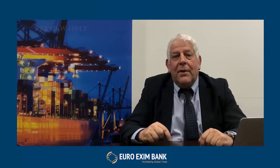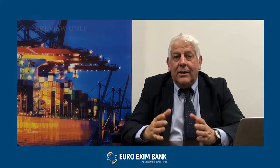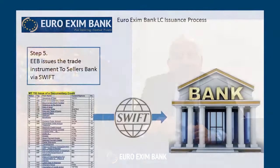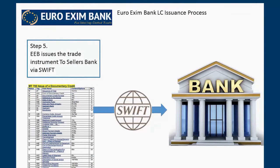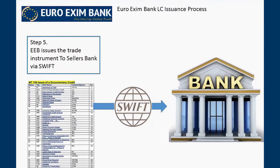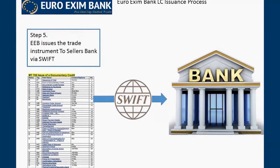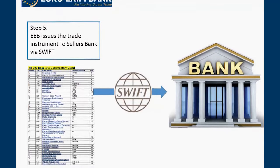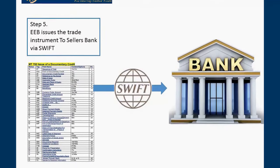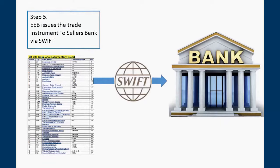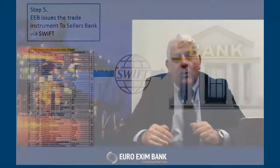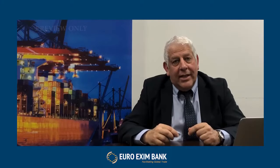Step five is the issuance process. At this point, we take the created SWIFT message and send it through our counterparties to the bank of the beneficiary. That is when the MT700, MT710, or MT760 physically moves over the SWIFT network, instructing that this transaction is going ahead.